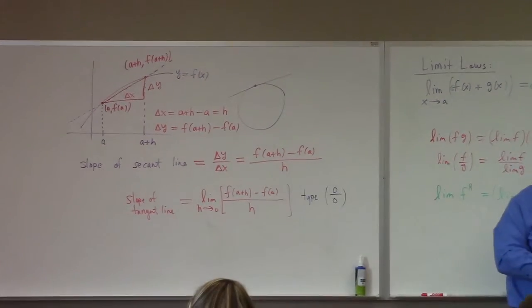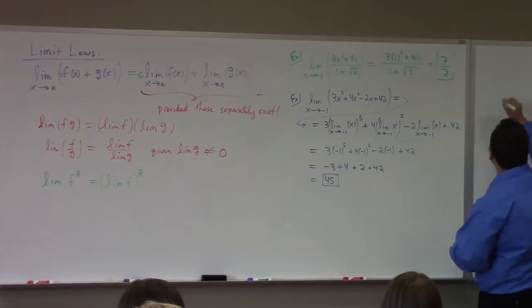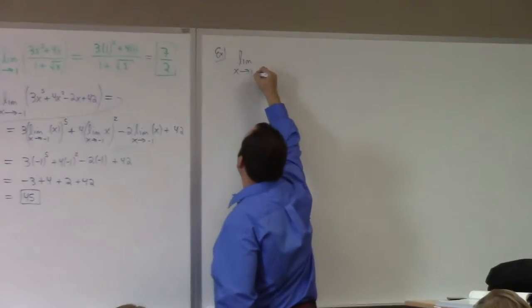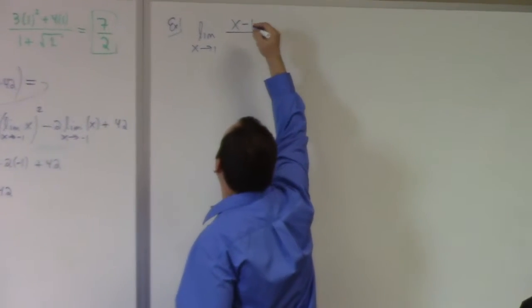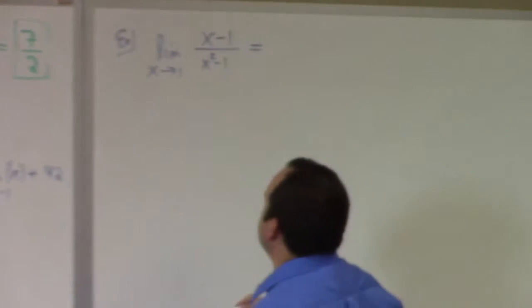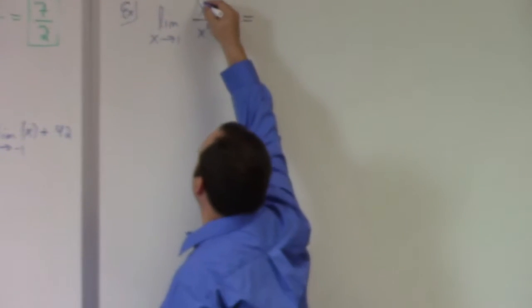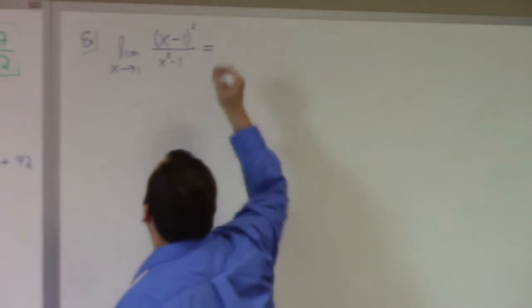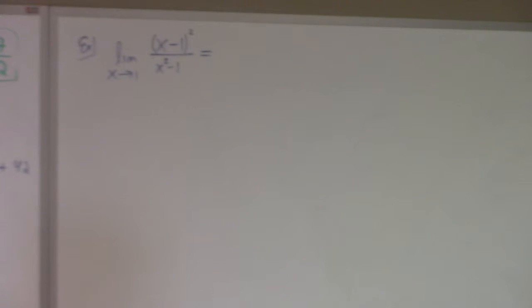Now let me try to convince you of that with some examples. So limit as x approaches one of x minus one over x squared minus one. I'm going to make this an x minus one parenthesis squared upstairs so as to not take us to the unhappy place right away.